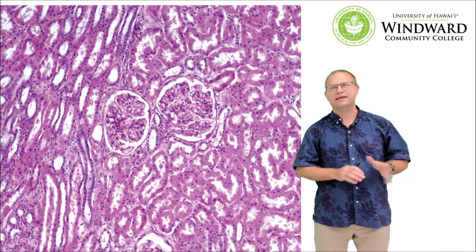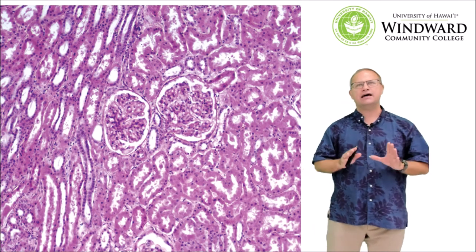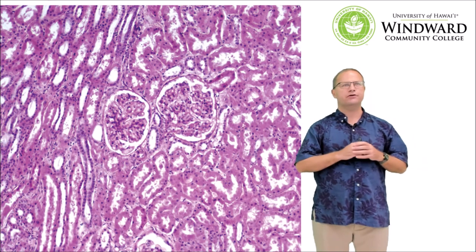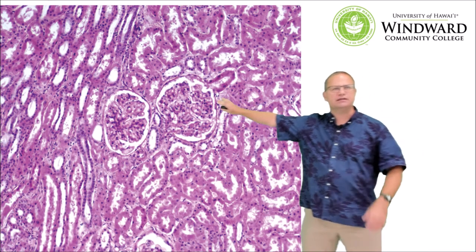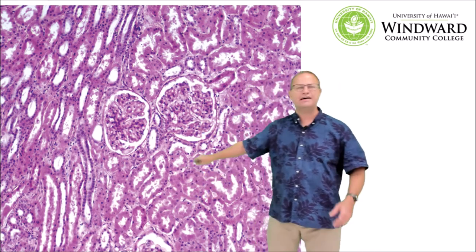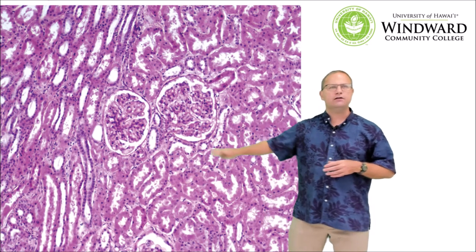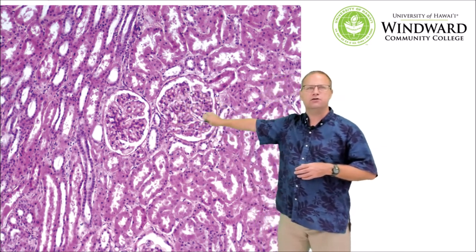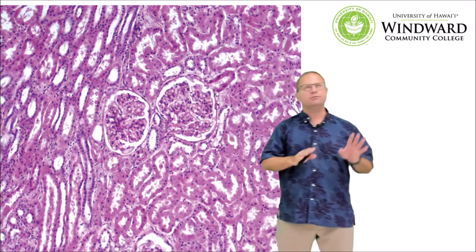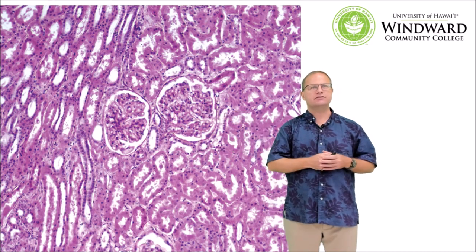Unlike the pineal gland, kidney histology is actually quite fascinating. We're not going to spend a lot of time right now talking about the microscopic structures, because we'll cover those in detail when we get to the urinary system. What you can see is lots of tubules, which are part of something called a nephron. A nephron is the smallest functional unit of the kidney, and it includes structures like the glomerulus, which is surrounded by the Bowman's capsule.